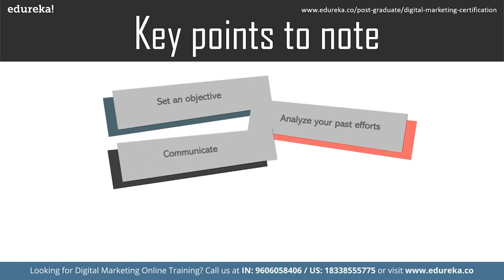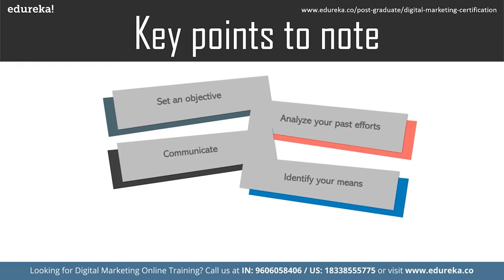The next key point is communication — how you communicate with your customers. Always remember who you are talking to and try to talk business in their language. Do not let the planning take away the people that you're trying to reach — know your audience well and try to be more interactive with them. Next, identify your means. Three things very important for identifying your means are: your budget, your digital channels, and your marketing team.